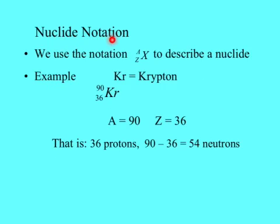Nuclide notation. This is called a nuclide notation. That X represents the element, Z the proton number, A the mass number. For example, Kr stands for krypton. It has 36 protons and 90 nucleons. 90 minus 36, 54 neutrons.